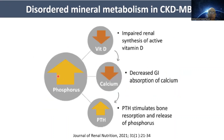Phosphate is a prime inducer of disordered mineral metabolism in CKD, as it results in reduction or suppression of vitamin D, reduction of serum calcium, and increase in parathyroid hormone, either directly or indirectly through interplay with other elements of CKD.